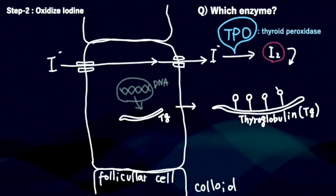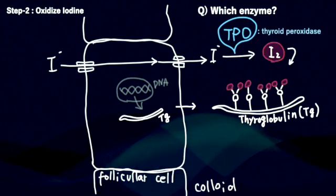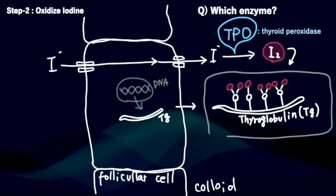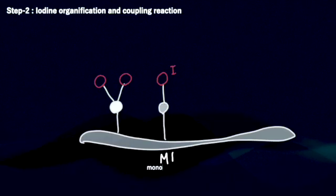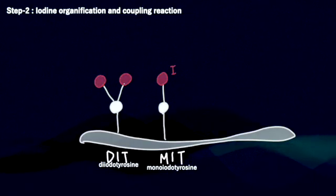Oxidized iodine binds to thyroglobulin. I will explain this in detail. This process forms monoiodotyrosine, MIT, with one iodine, and diiodotyrosine, DIT, with two iodines.